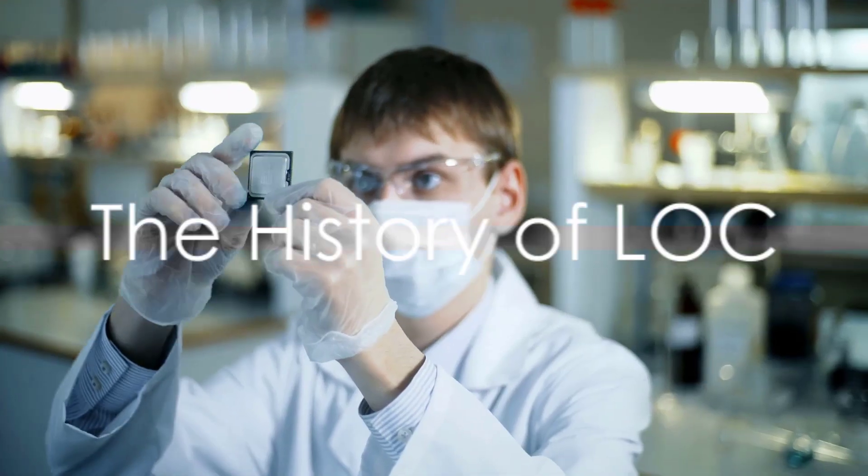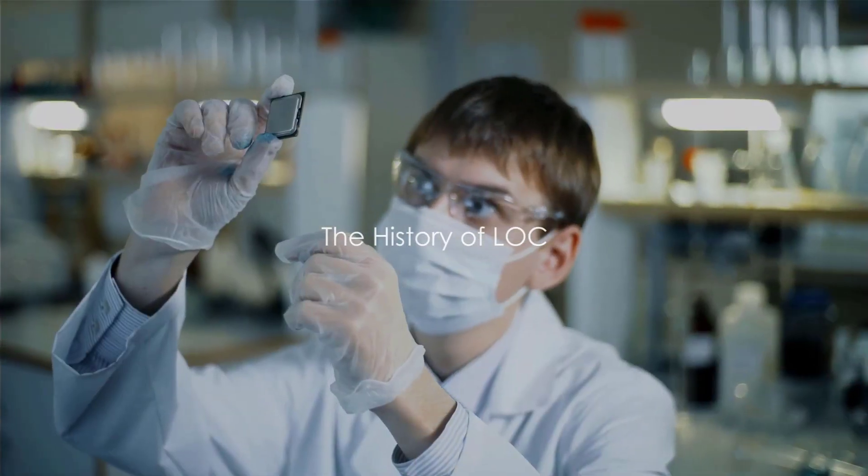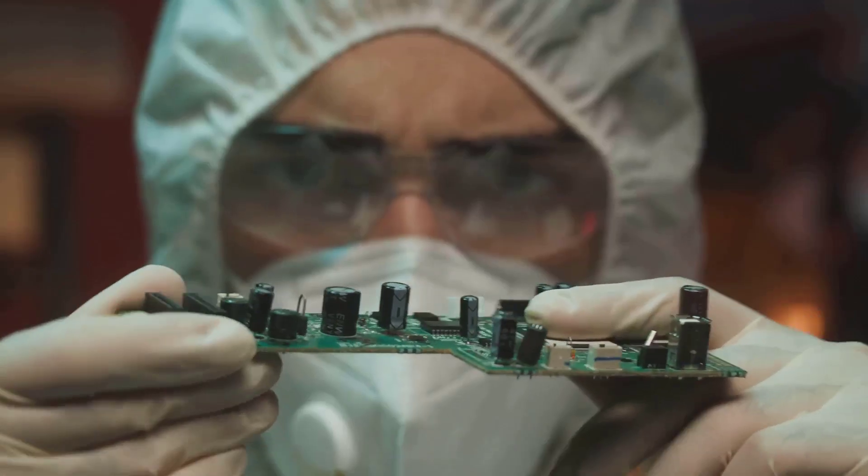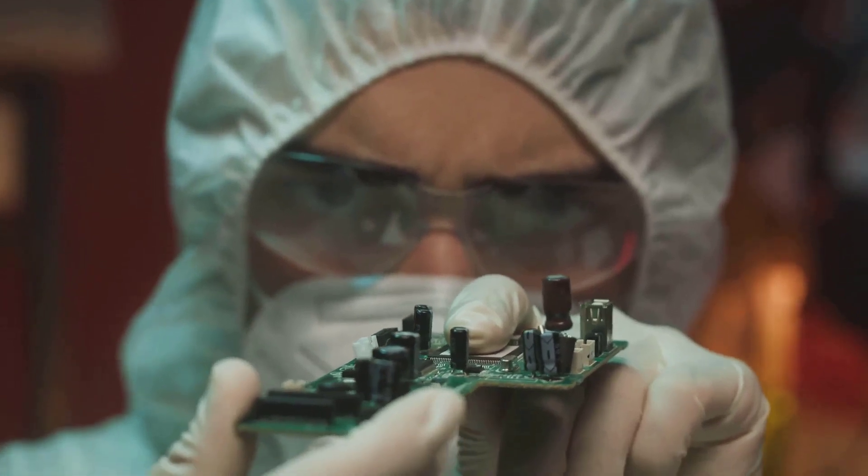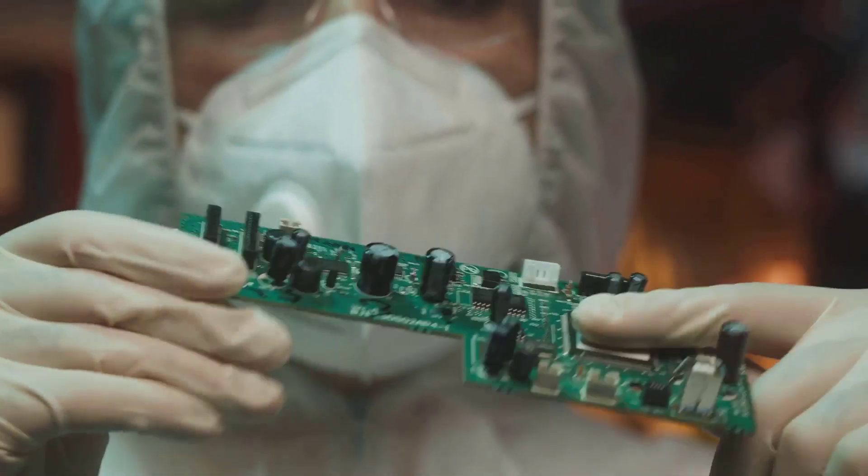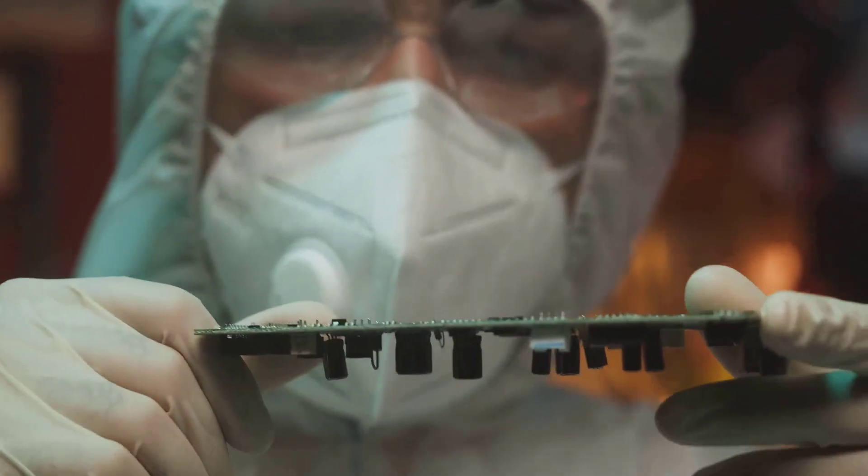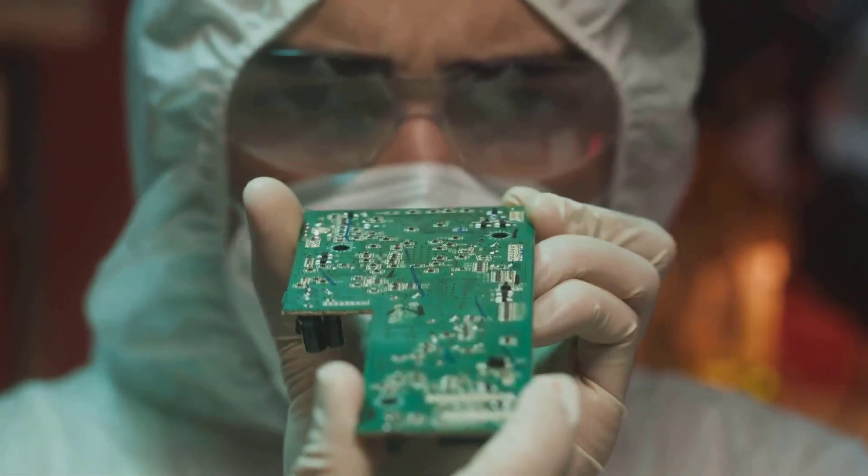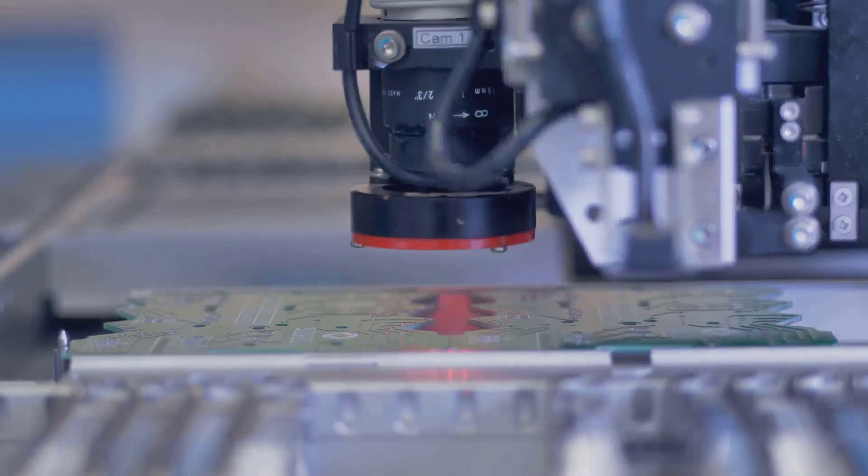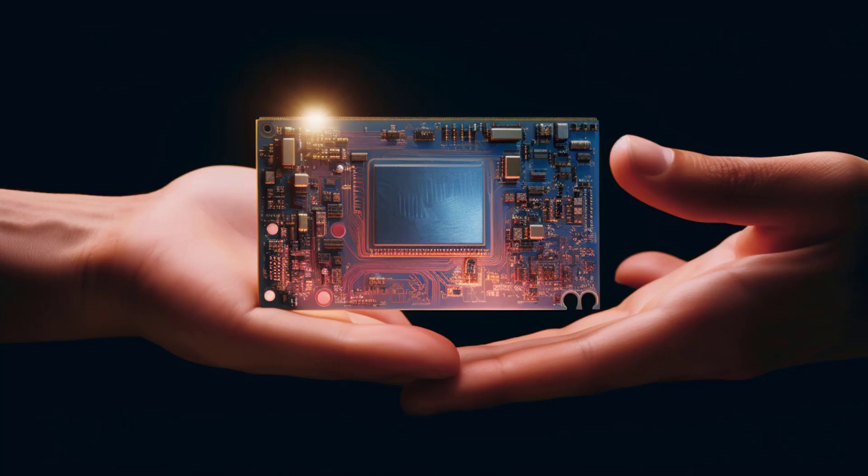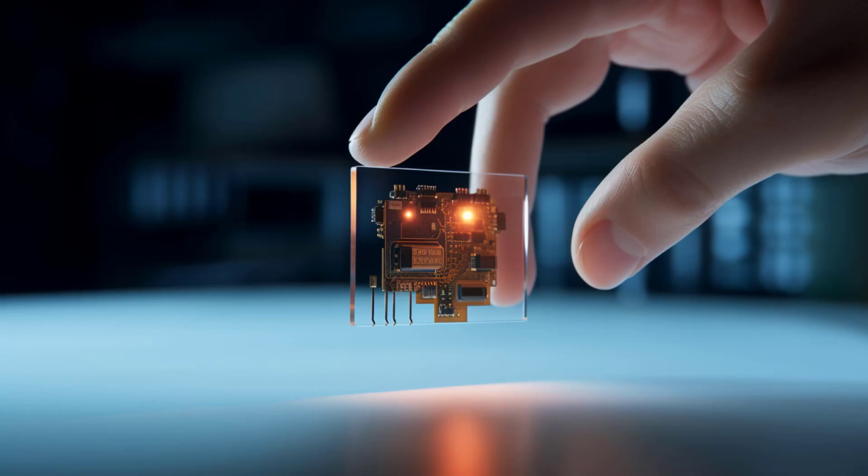The history of lab-on-a-chip technology is a fascinating tale of scientific progress. Our story begins in the late 20th century with the birth of microelectromechanical systems, or MEMS. This was a pivotal moment, as it marked the first time scientists could manipulate physical entities at the microscale. Fast forward to the 90s, the term lab-on-a-chip was coined. This was a period of rapid innovation and development, with a focus on integrating several laboratory functions onto a single chip.